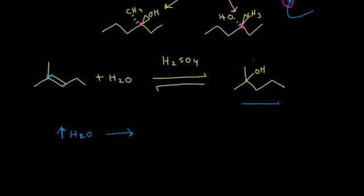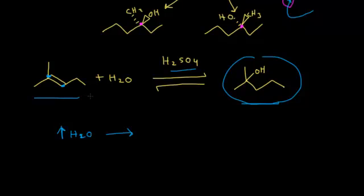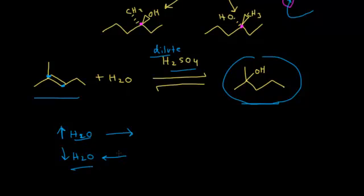But remember — if you have an alcohol as product and react it with sulfuric acid, that's an E1 elimination reaction, acid-catalyzed dehydration. Adding concentrated sulfuric acid to your alcohol forms your alkene; that's what we saw earlier with E1 elimination, where the major product is the most substituted alkene. To shift equilibrium to the right and make the alcohol, dilute your sulfuric acid by adding more water. To shift equilibrium to the left and make the alkene, decrease the concentration of water by using concentrated sulfuric acid. It all depends on what you're trying to make.